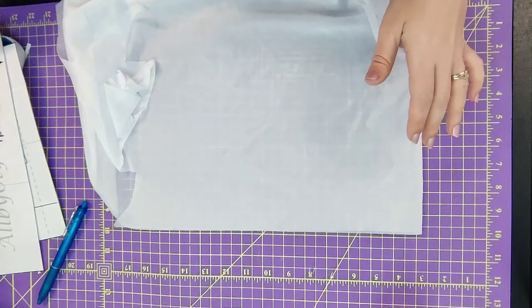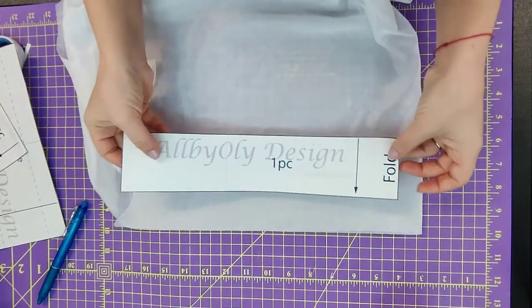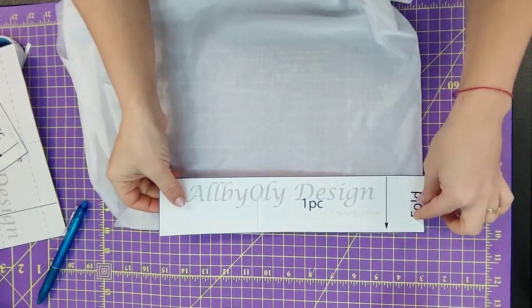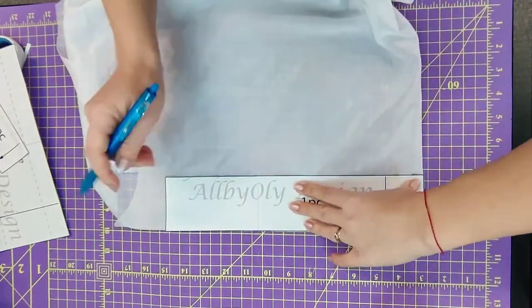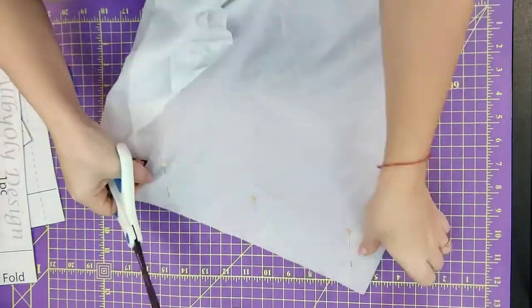We're going to fold fusible in half and take the first piece of the pattern. Pay attention to the fold part and place it on the folded part. Trace it around and then add a couple pins to make it easier to cut.